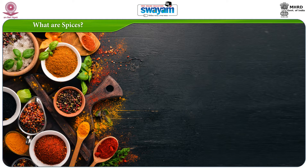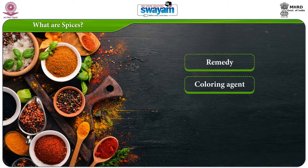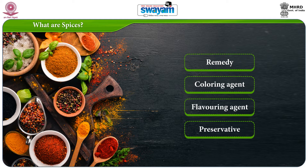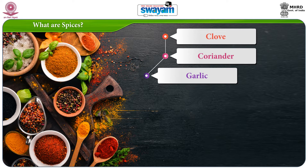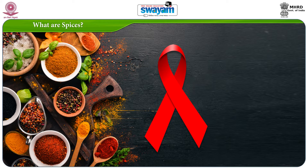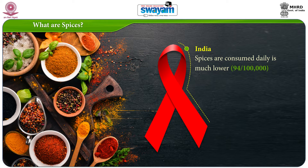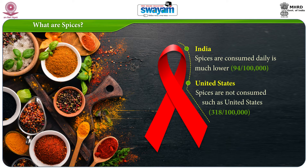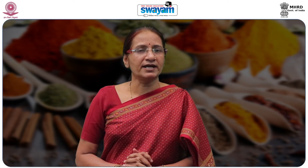Spices have been extensively used since ancient times as a means of remedy, colouring agent, flavouring agent and preservative. Tremendous studies have shown that nutraceuticals derived from spices such as clove, coriander, garlic, ginger, onion, pepper and turmeric remarkably prevent and cure various chronic diseases by targeting inflammatory pathways. Epidemiological studies indicate that cancer incidence in countries such as India, where spices are consumed daily, is much lower than in countries where spices are not consumed such as the United States, suggesting the potential role of spices in cancer prevention.